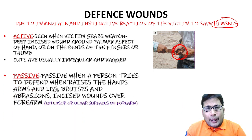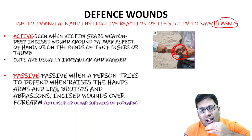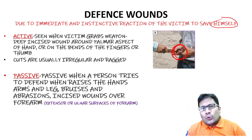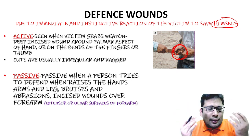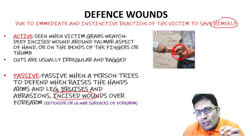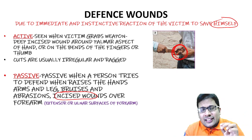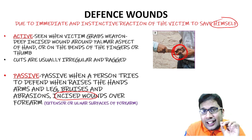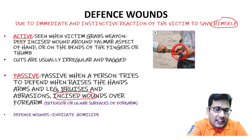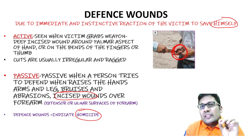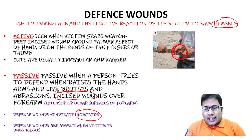In passive defense, there can be bruises, abrasions, and incised wounds. The common site of incised wound is the extensor or ulnar surface of the forearm. These defense wounds indicate it is a homicide. Remember: when the patient is unconscious, these defense injuries are absent. The answer for this question is active defense injuries.